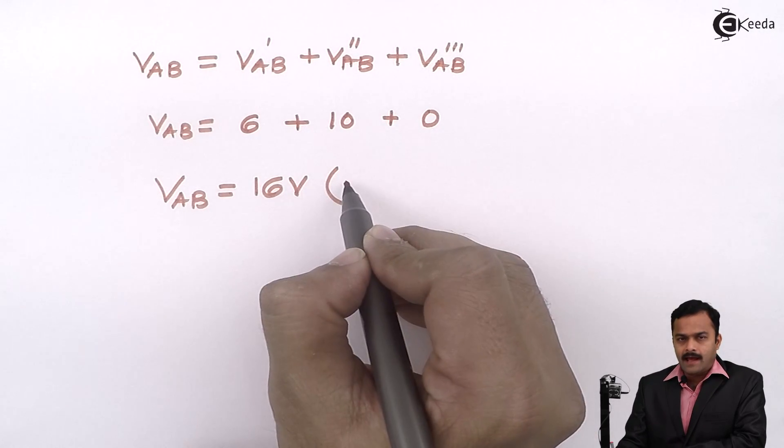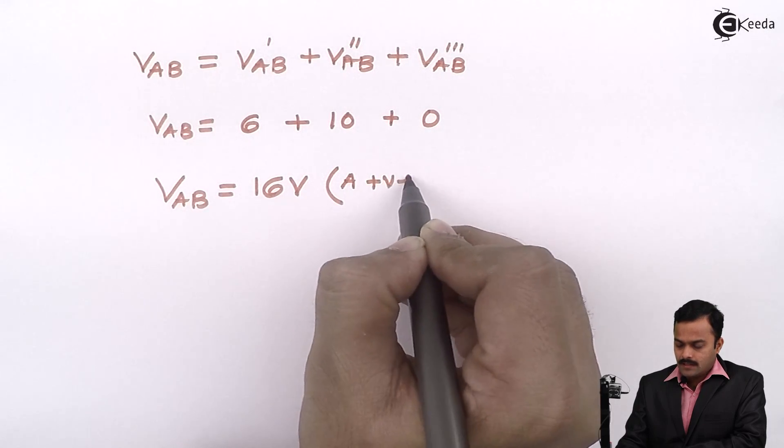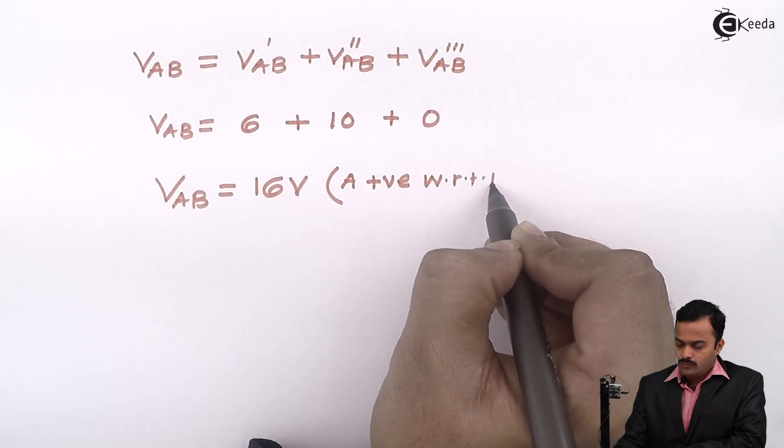And here I can add one more line to complete answer. I am getting this answer when A positive with respect to B.